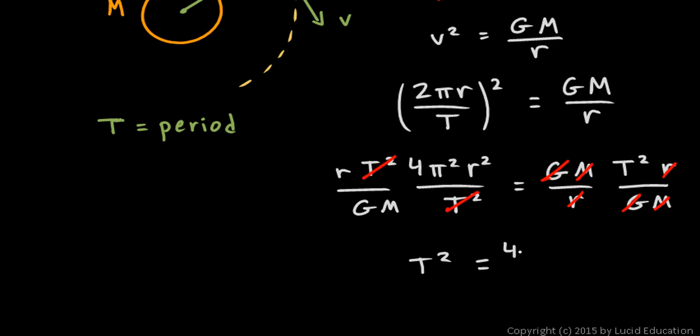We see 4π² over GM times r³. Now look at this: 4 is a constant, π is a constant, so π² is a constant; big G is the universal gravitational constant; and M, the mass being orbited, is a constant. So all of this, 4π² over GM, is a constant, which means T² equals some constant times r³. That's the same thing as saying T² is proportional to r³.